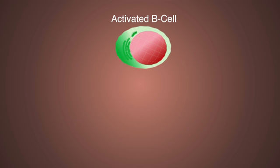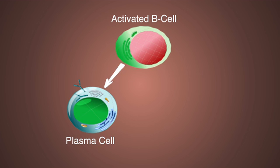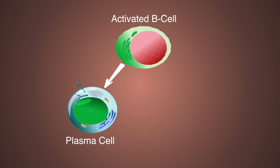Now that we have a fully activated B-cell, something interesting is gonna happen. It's gonna go through a process called clonal expansion, meaning it rapidly divides and differentiates into two main types of cells: plasma cells and memory B-cells.